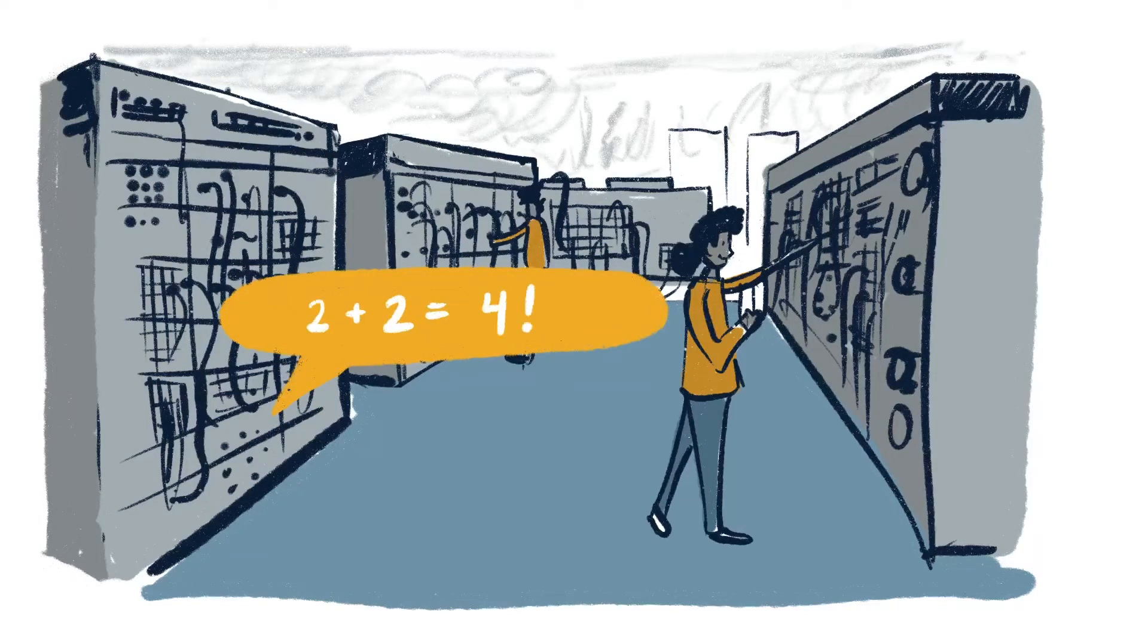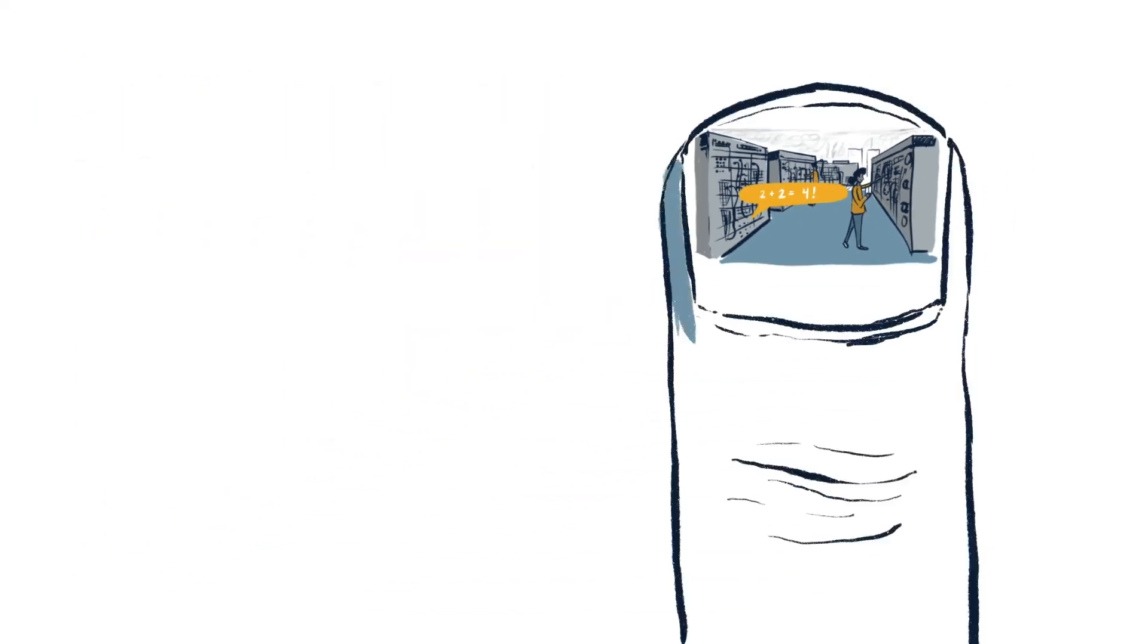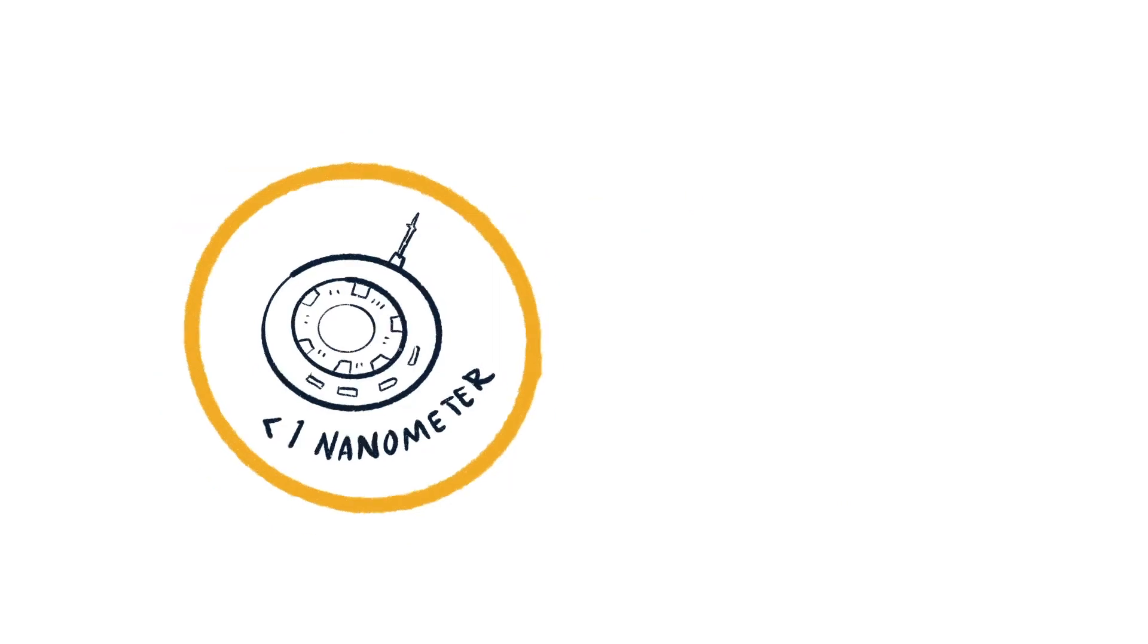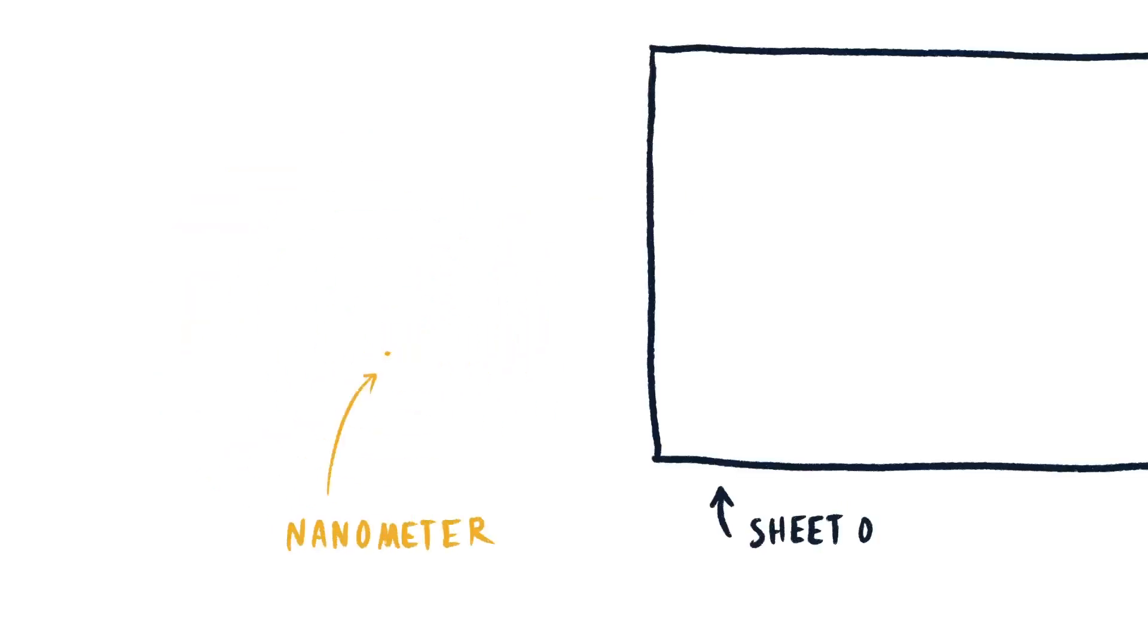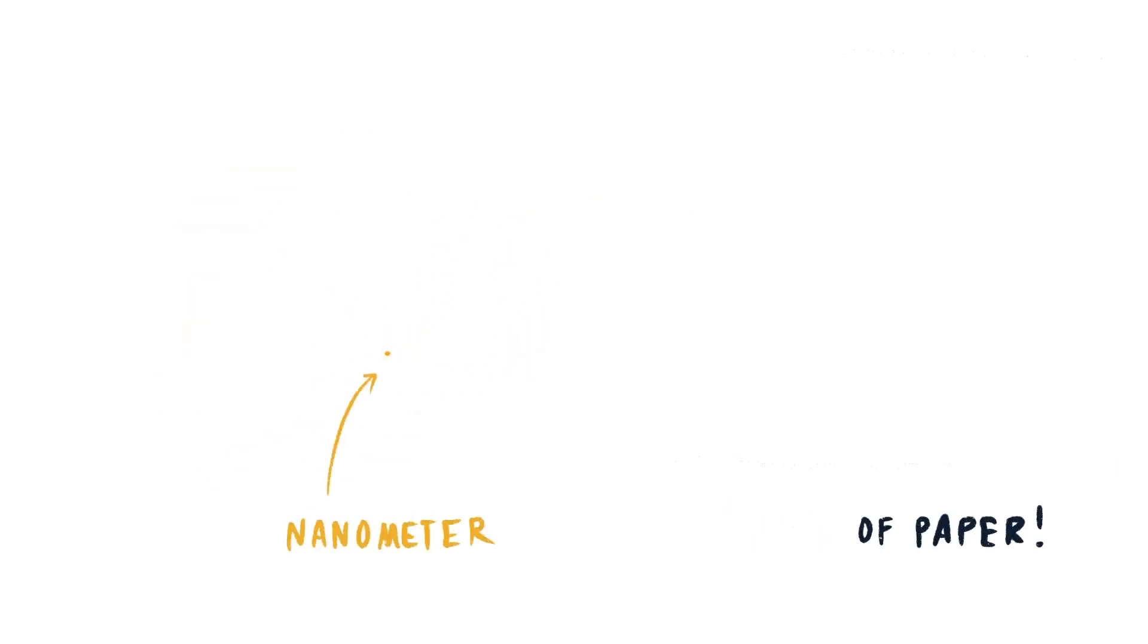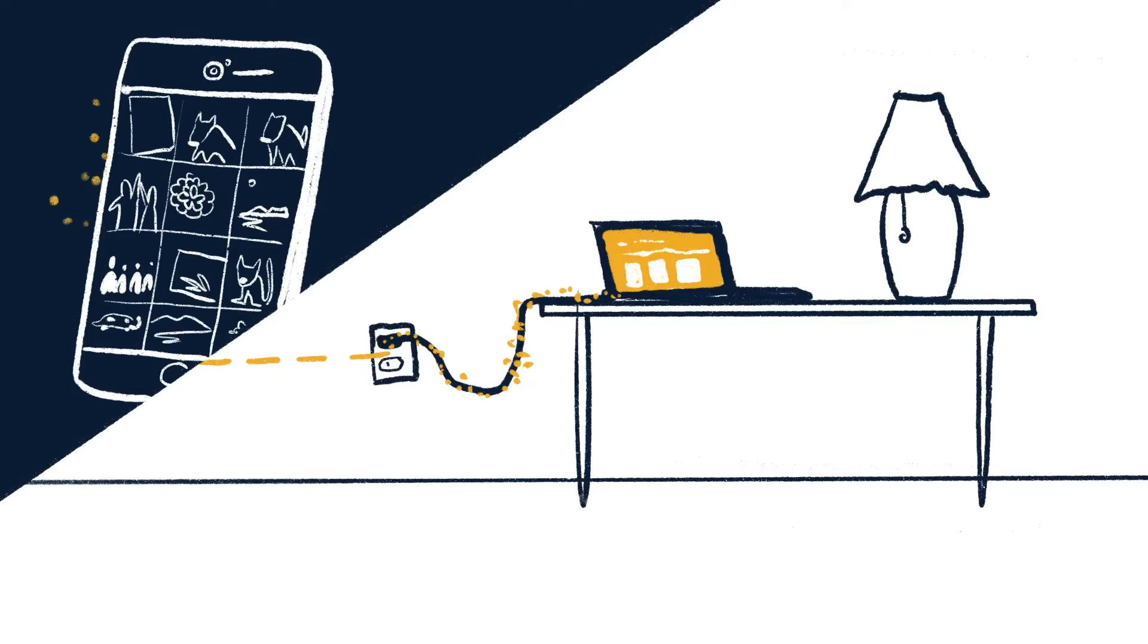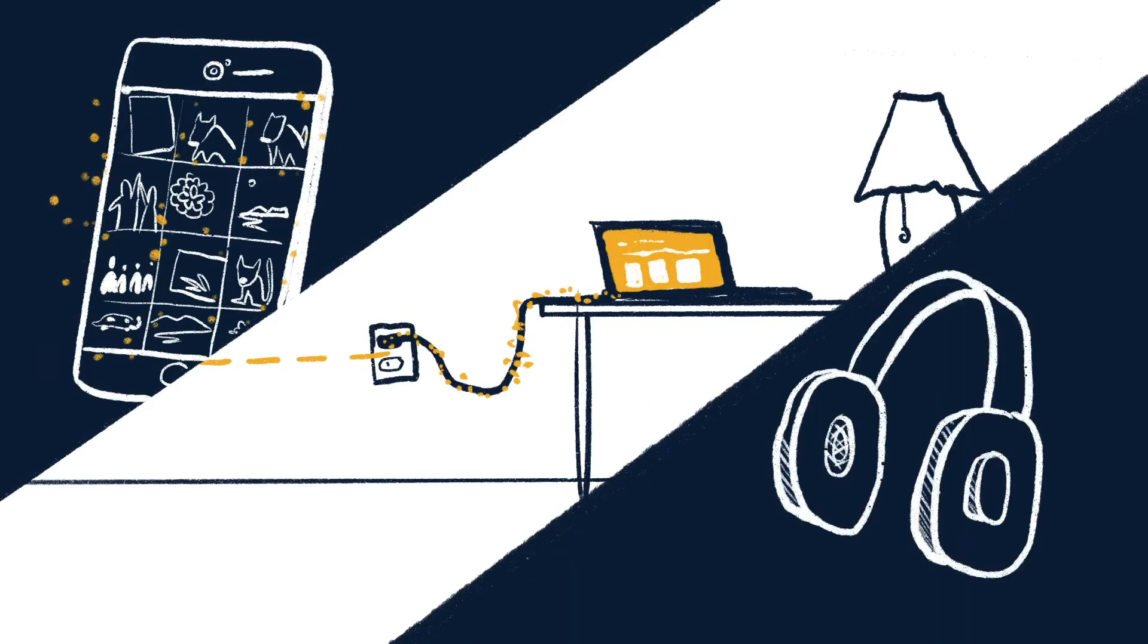That same machine today is the size of your fingernail, with some of its parts only nanometers long—that's 10,000 times thinner than a sheet of paper. And these tiny computers can perform calculations a trillion times faster. That processing power lets us type up reports for school, share photos with friends, and listen to our favorite songs.